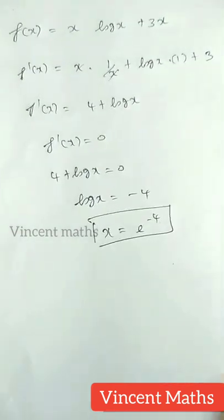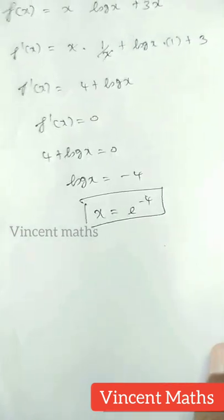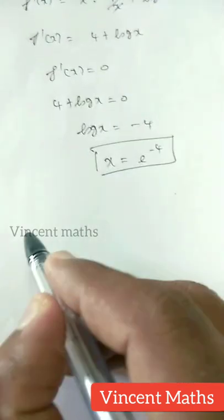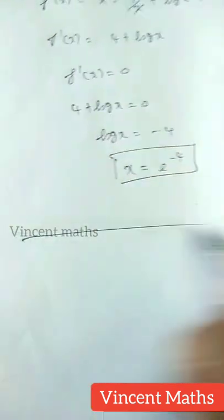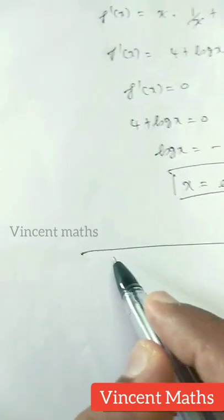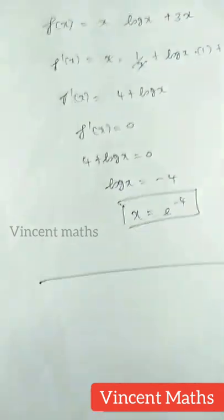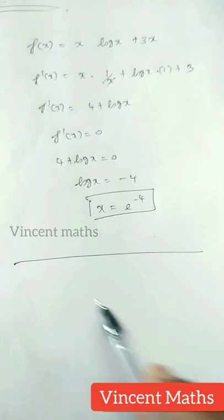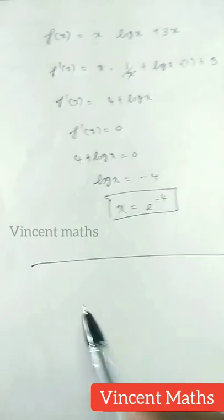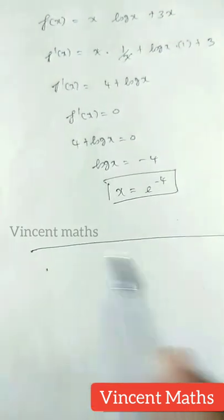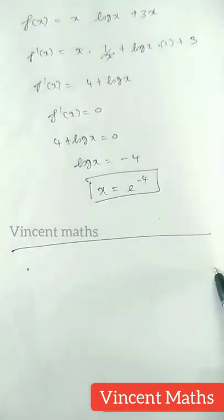Then we have to find x's value and set up the number line. We substitute on the number line. We use this limit, and we get the range from minus infinity to plus infinity.